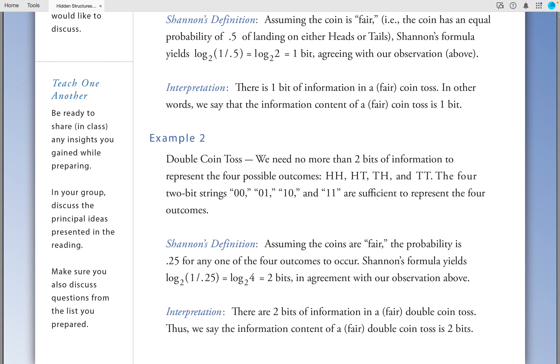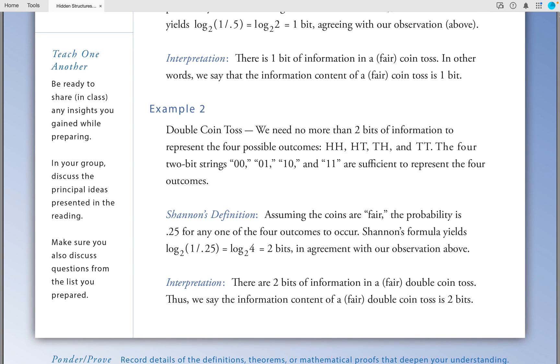Again, in agreement with our observation earlier. Interpretation: There are two bits of information in a fair double coin toss. Thus, we say the information content of a double coin toss is two bits.